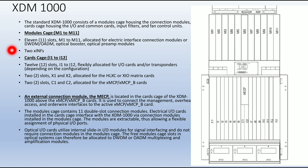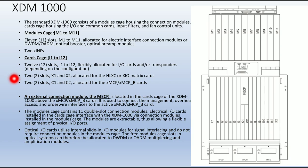There are two XINF slots for the input filter. There is a card cage for I1 to I12 — here you can see I1 to I12. There are 12 slots for the card cage, flexibly allocated for the input-output cards and transponder cards depending on the configuration. There are two slots X1 and X2 for the HLXC matrix card.